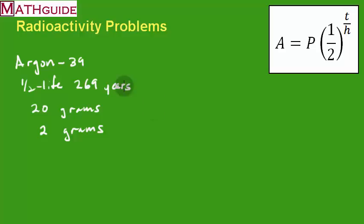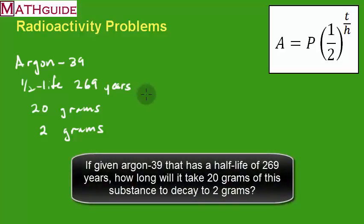The problem would say: if we have argon-39, which has a half-life of 269 years, how long will it take 20 grams of the substance to decay to 2 grams? Let's solve the problem. In order to solve it, we're obviously going to use this equation, and we're going to plug in numbers.